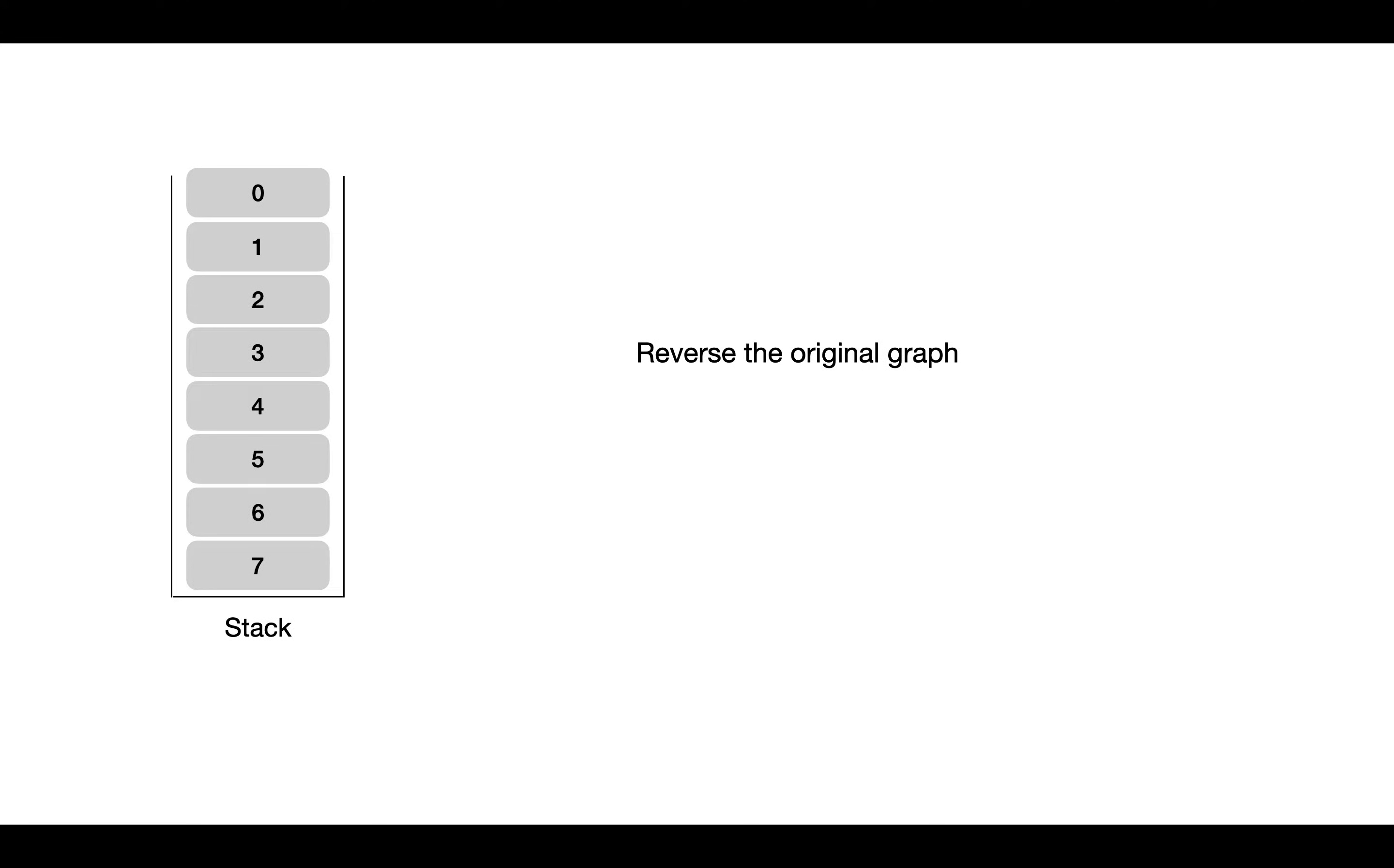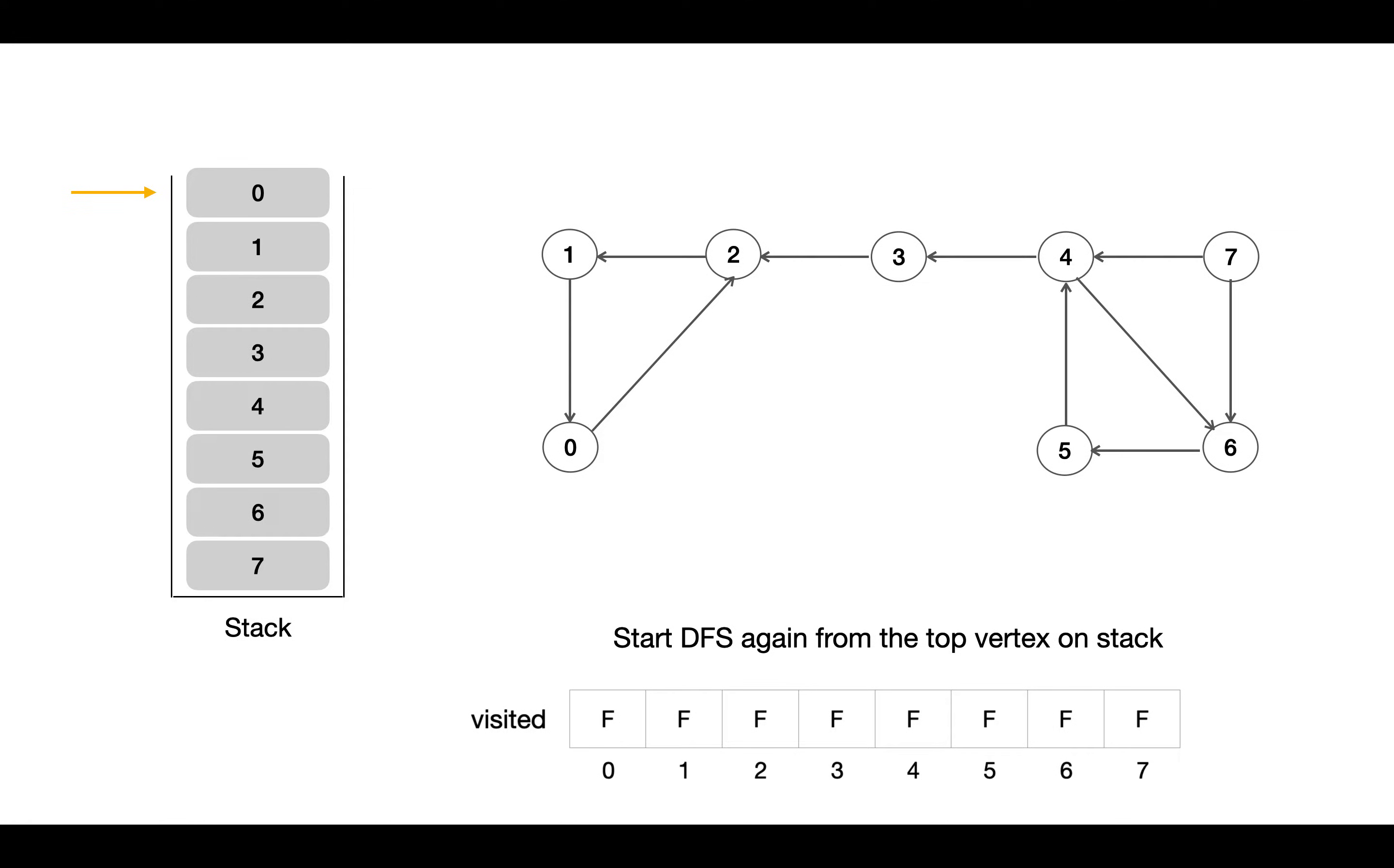Now step 2 comes where we reverse the original graph and again do DFS traversal starting from top vertex present in the stack, which in our case is 0. So we pop 0 and start traversing graph from 0 and mark it as visited. From 0 we can go to 2, so vertex 2 gets visited, and then 1. From 1 we again get to 0 which is already traversed, so here we get done with this DFS traversal, which means we get a strongly connected component.